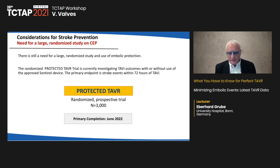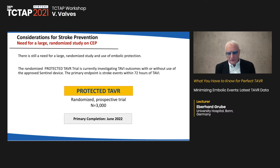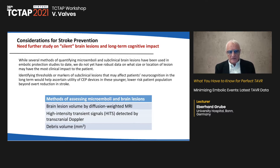The PROTECT TAVR trial — a randomized trial including 3,000 patients — has a primary completion date of June 2022 and will likely answer many remaining questions. Further study is also needed on silent brain lesions and long-term cognitive impact by diffusion-weighted MRI, transcranial Doppler, and debris volume analysis.